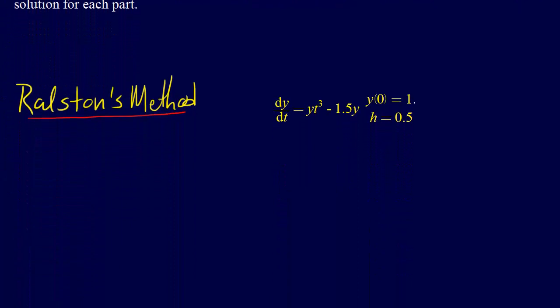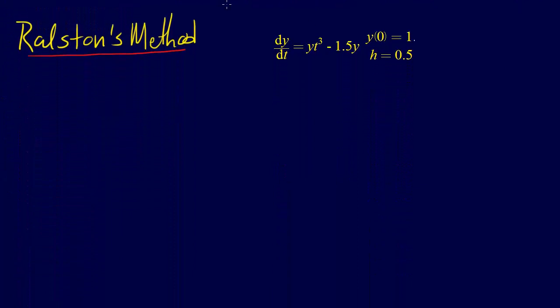So let's go ahead and go down and get started. Ralston's method, again, is a second order Runge-Kutta, and for the second order Runge-Kutta, the general formula we have is Y_{i+1} equals Y_i plus, and then we have A_1 K_1 plus A_2 K_2 times H.